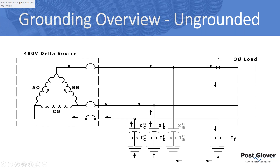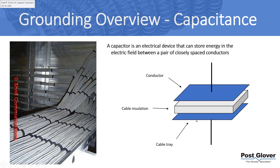Let's start with ungrounded systems. We have a ground fault on phase A in a three-phase three-wire system. It's not intentionally grounded, so how does it complete the circuit? The only path it has is through what we call the system's capacitance. A capacitor is two conductors with an insulator in between — parallel cables, motor windings, almost everything in your system has a very small level of capacitance that adds up. That's a naturally occurring ground fault path — the capacitive charging current.